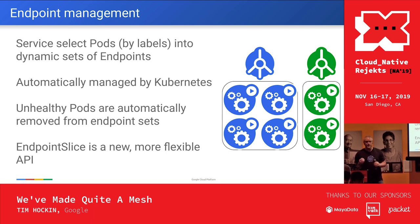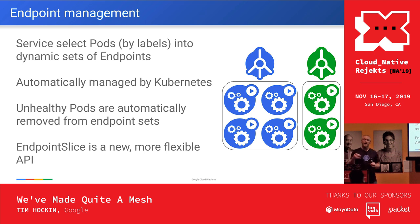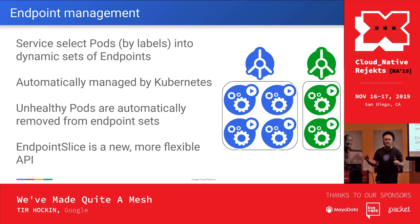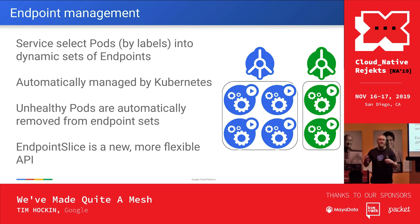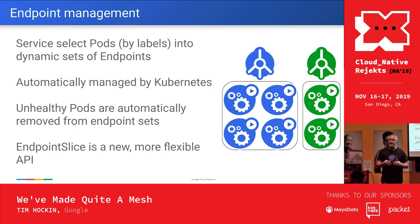Endpoint Management. Services in Kubernetes select pods via label selectors — that's at the foundations of what makes Kubernetes interesting. Those endpoints are automatically managed by Kubernetes. If a pod fails its readiness probe, it gets removed from the endpoint set for that service, and consumers don't need to be aware that anything happened. We now have a new API called EndpointSlice, going beta but not on by default in the next release, which expands endpoint management further and makes it more generic.